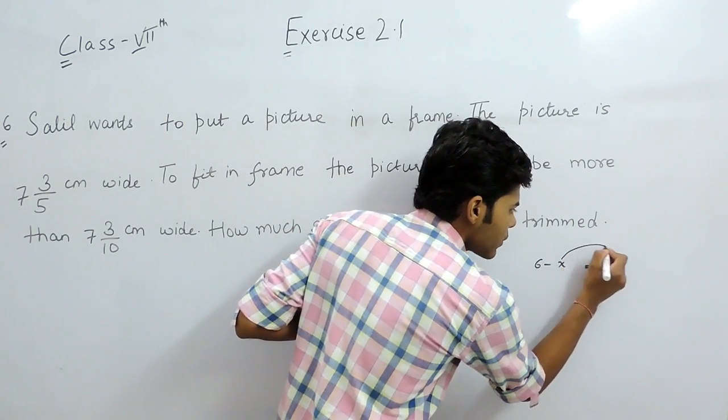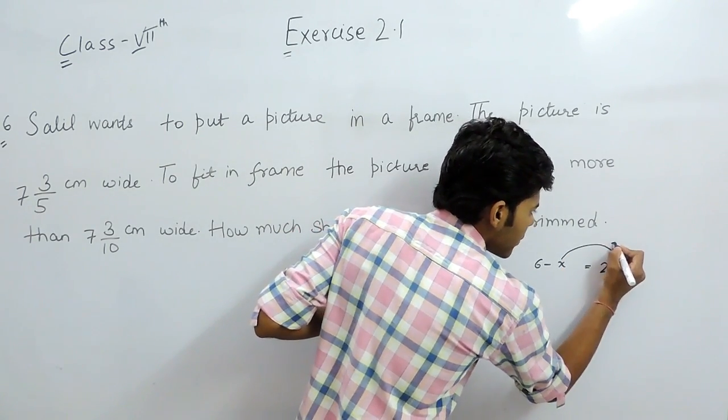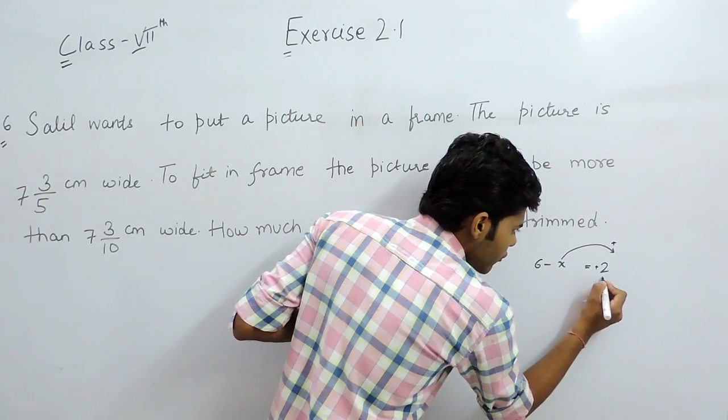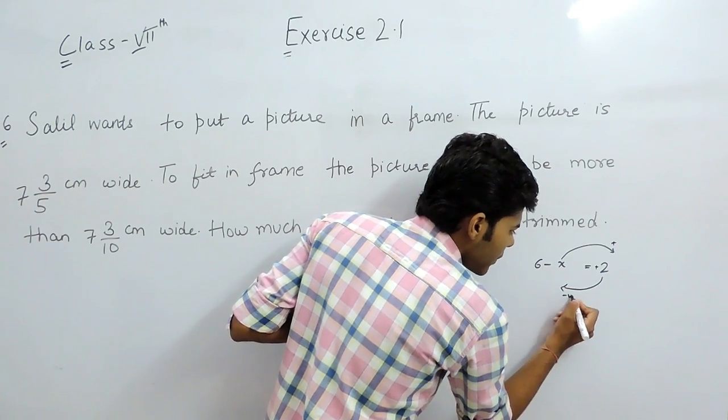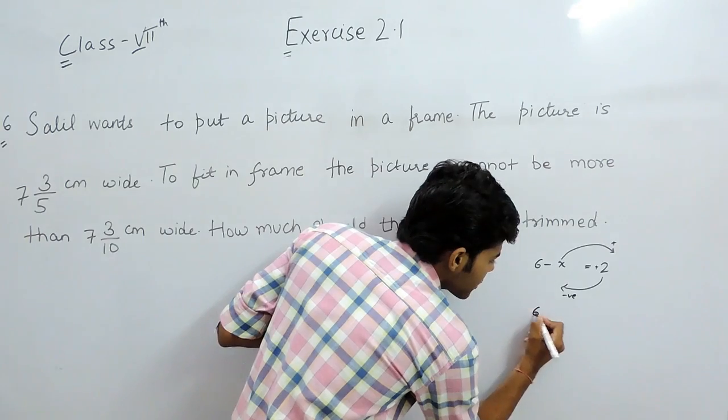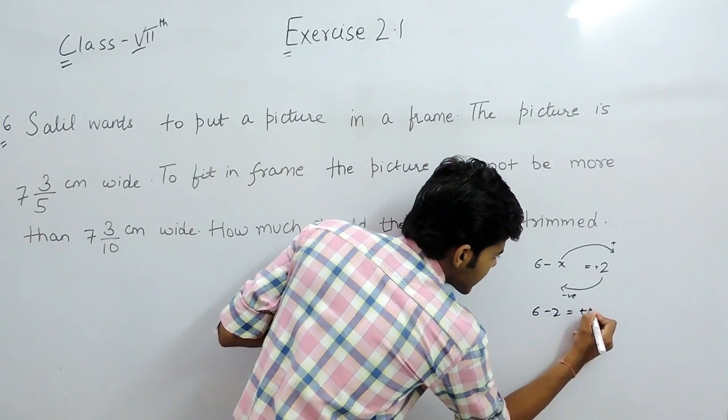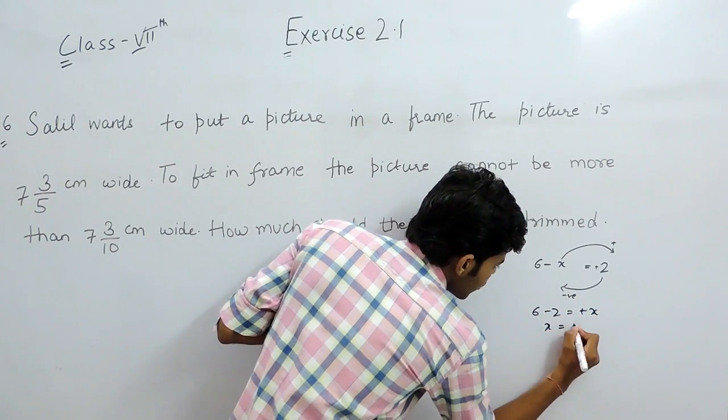So as I told you, if this x will be shifted to this side, it will become positive and if this positive 2 will be shifted to this side, it will become negative. So 6 minus 2 will be equal to plus x and x will be equal to 4.